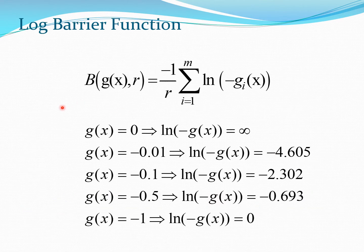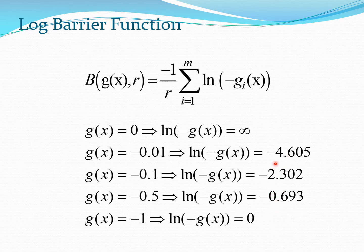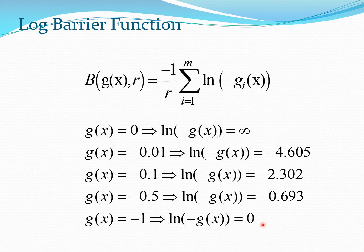The log barrier function shows similar behavior. At g(x) = 0 there is a clear singularity with the function blowing up. Going relatively far from the boundary — say g(x) = −1 — the barrier function has a certain value. As you move from g(x) = −1 to g(x) = 0, log(−g(x)) goes from 0 all the way to the singularity. So as you close in on the boundary of the feasible region, you form a substantial barrier, and any optimization method will be pushed back into the feasible region.